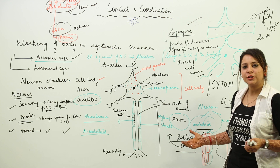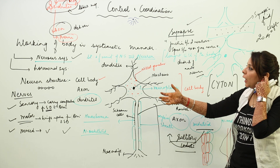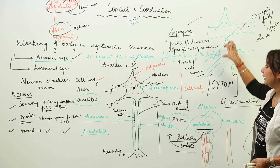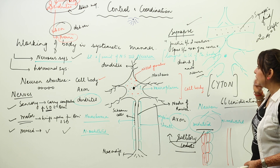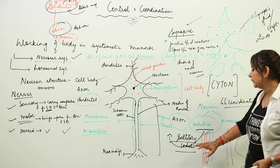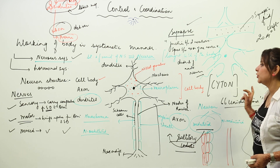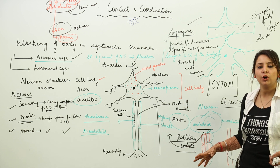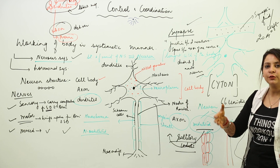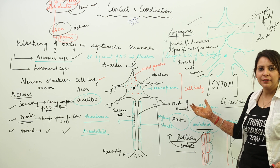The medullated neuron is the more efficient one because the impulse passes at a faster rate via saltatory conduction — jumping from one node of Ranvier to another. This concludes the basic introduction about control and coordination. You now know the structure of a neuron, the types of nerves, synapse, and the difference between medullated and non-medullated neurons. Try to draw a neuron and practice these concepts before moving to the next topic.